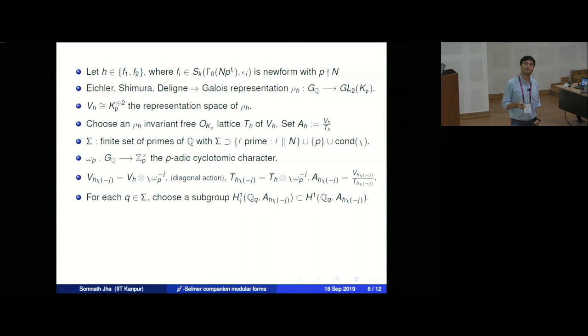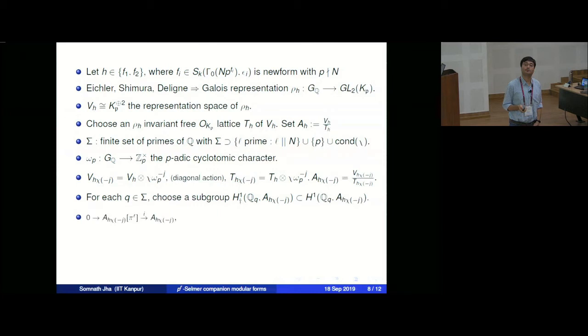There is a general recipe for defining a Selmer group. For each prime Q in Σ, you choose a subgroup — call it H^1_† — of the local H^1 at the completion of Q. Once you specify what † means, you define the Selmer group as the kernel of the restriction map: from H^1 of the global Galois group with the discrete module, mapping to the product over Q in Σ of the quotient H^1/H^1_†.